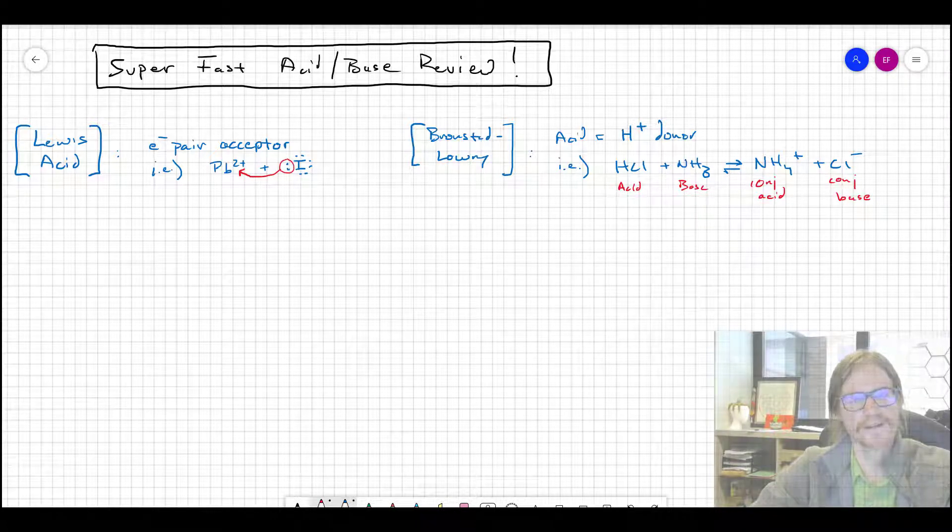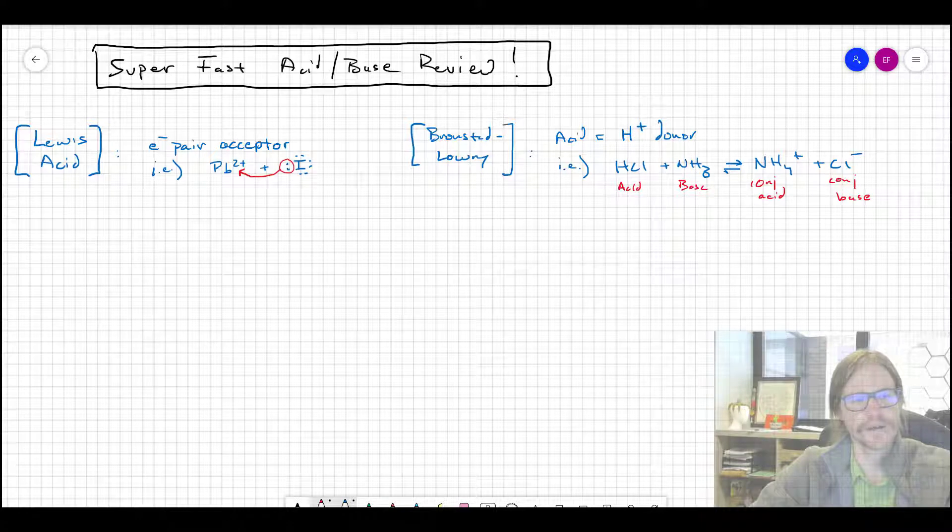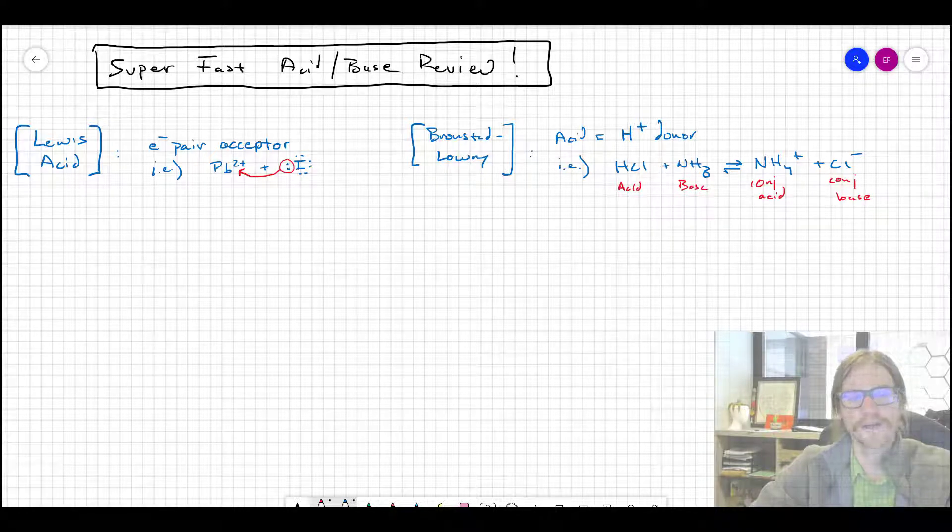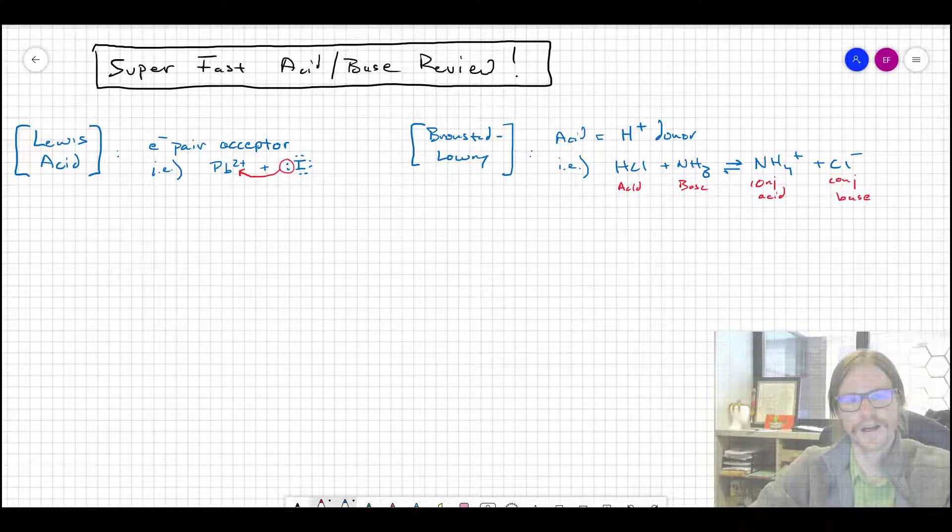The acceptor of the electron pair is the acid, the donor of the electron pair is the Lewis base. What we're more commonly going to talk about are Bronsted-Lowry acid-bases. In that formalism, the acid is the donor - in this case, donating a proton or an H+ ion.